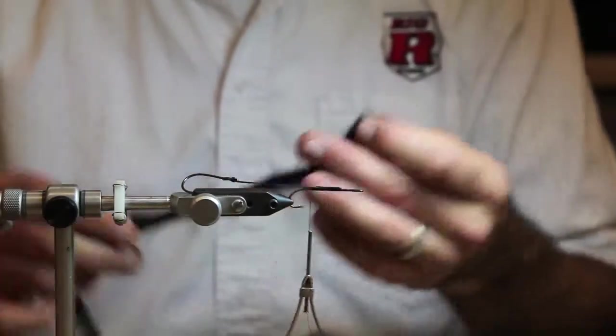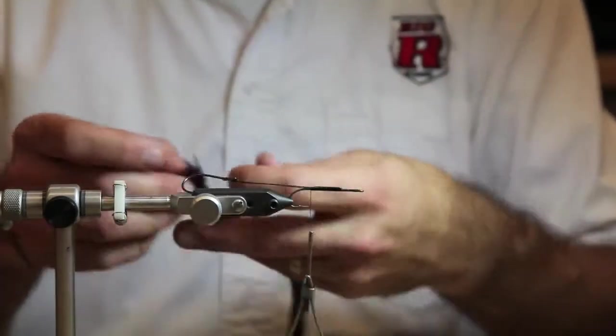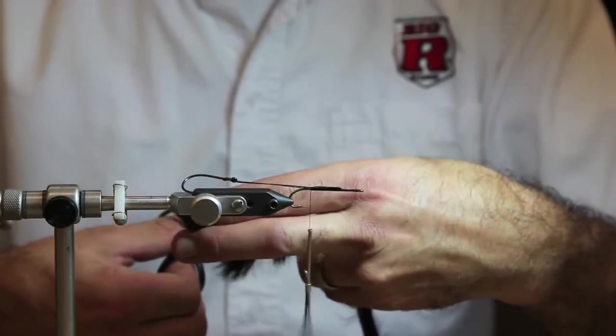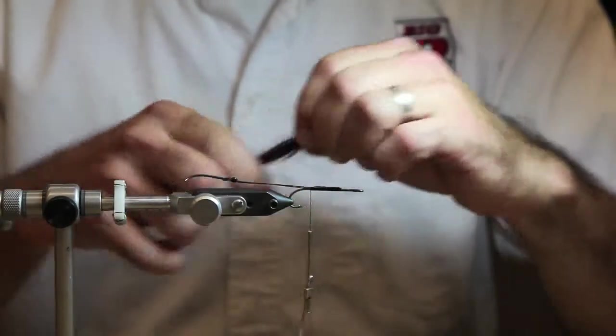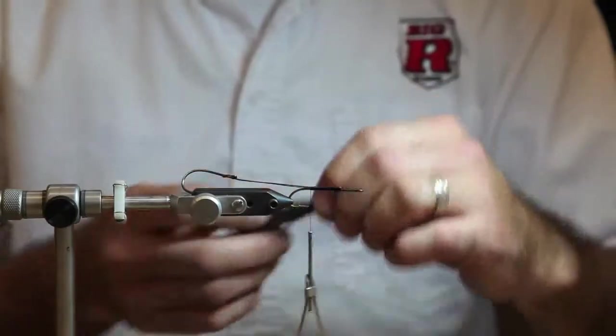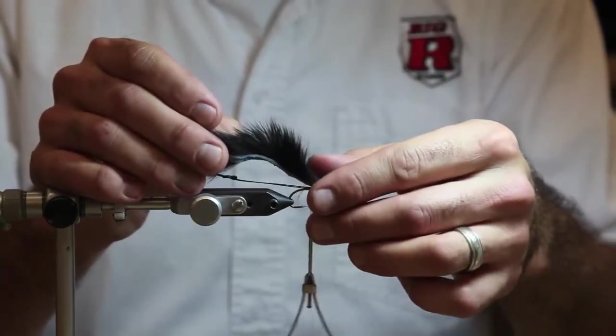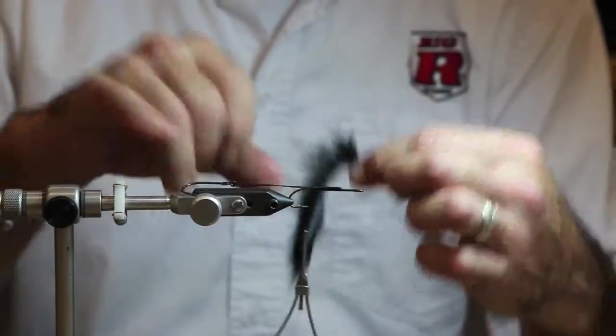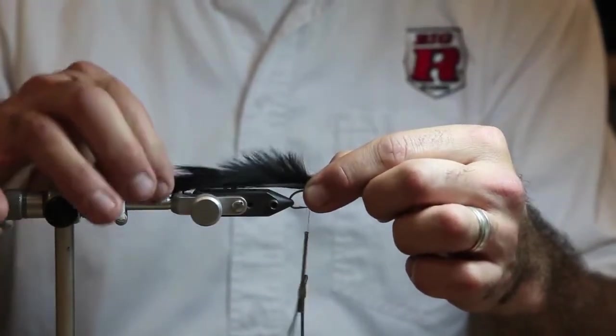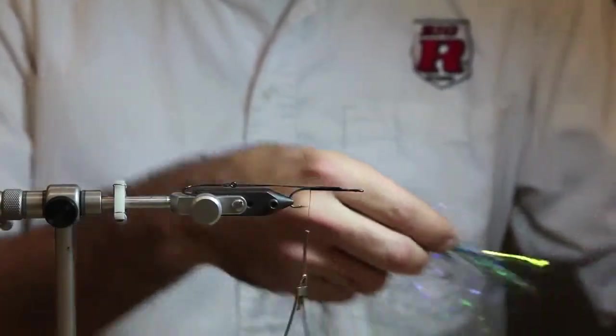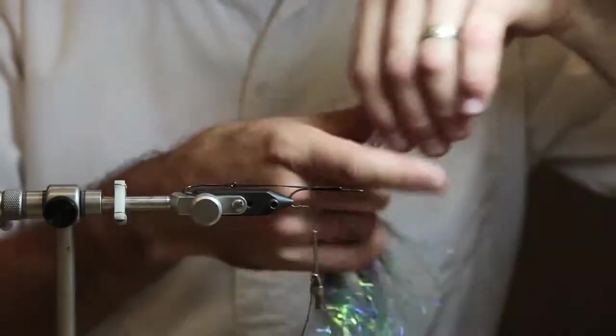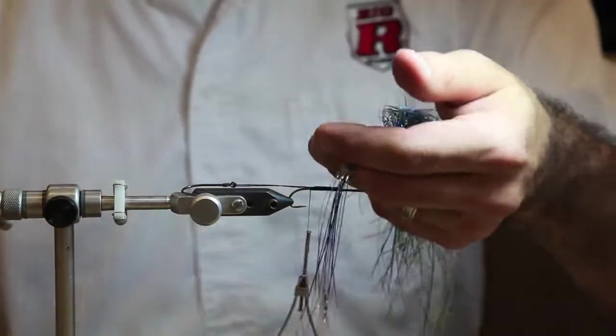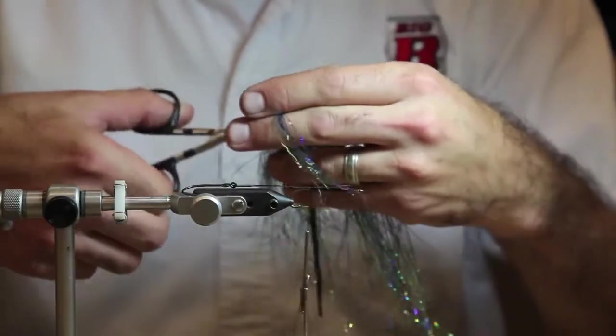The next thing I'm using is just black rabbit strip here. You can tie this into various colors. I really like black and purple or black and blue for this fly. It seems to work the best for me. You want to measure it out to where it just comes to the end of your stinger hook. Then I'm actually going to put some flash on first and the flash is going to go underneath this black rabbit strip. Since I'm going to do blue, I got a blue and kind of green flash that's going to go in here.